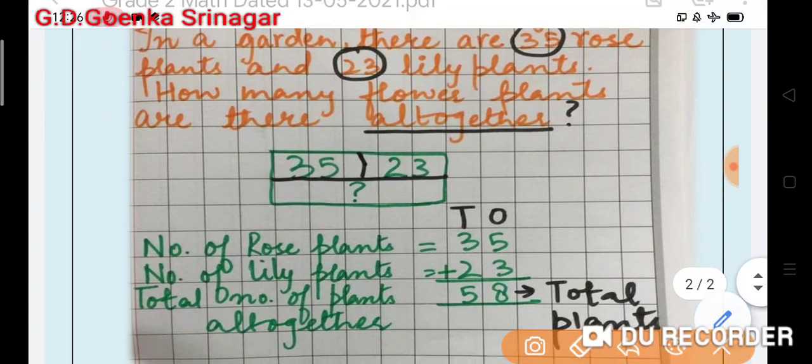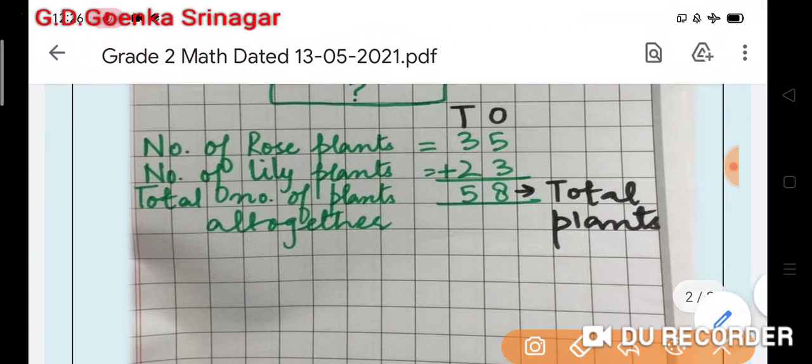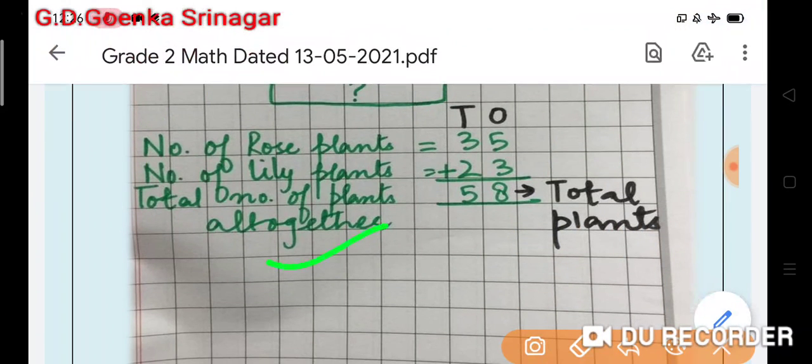Now, we will first write the numbers here in this box and we have to find the total number of flower plants all together. So, the statement here comes number of rose plants is equal to 35. Number of lily plants is equal to 23. And total number of plants all together. So, we will add 35 plus 23. We will put a plus sign and the total number of plants here is 58. That is the sum or the total of 35 plus 23.